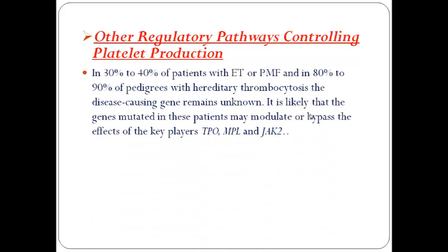The last pathogenetic mechanism involves other regulatory pathways controlling platelet production. In 30 to 40% of patients with erythrocytosis or primary myelofibrosis, and in 80 to 90% of patients with hereditary thrombocytosis, the disease-causing gene remains unknown. It is likely that the mutated genes in these patients modulate or bypass the effects of the key players: thrombopoietin, MPL, and JAK2 tyrosine kinase.